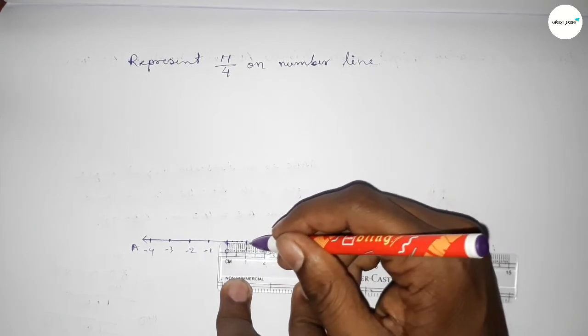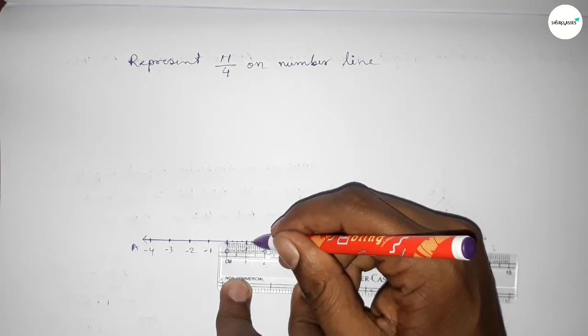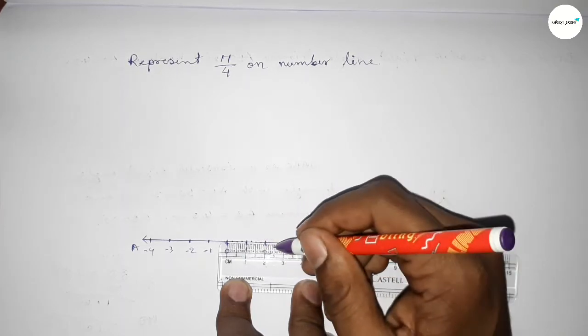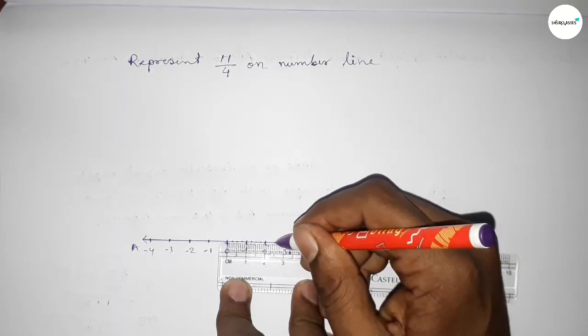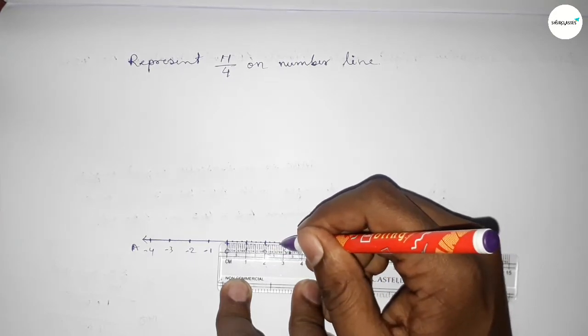First taking the half, then divide it. So this is 1.25 approximately, and this is half, so this is 1.75 approximately. So by this way we can divide the distance between any two numbers into four equal parts.